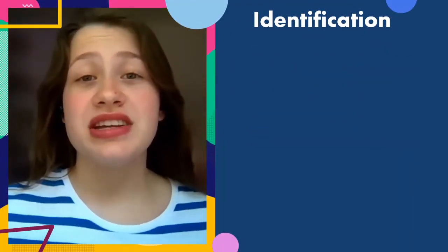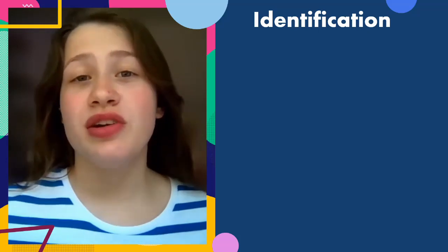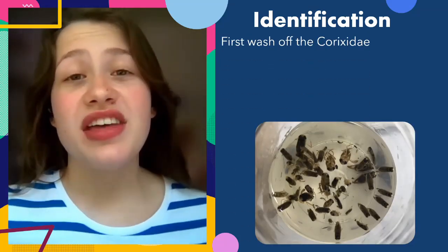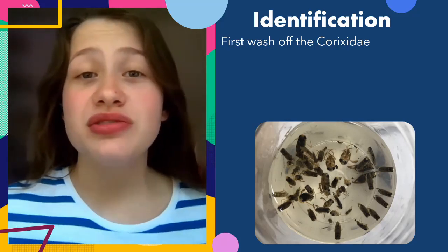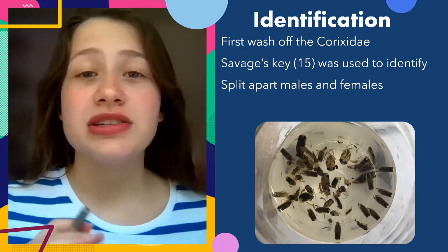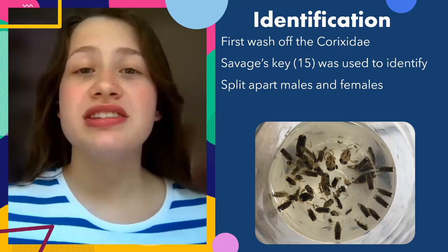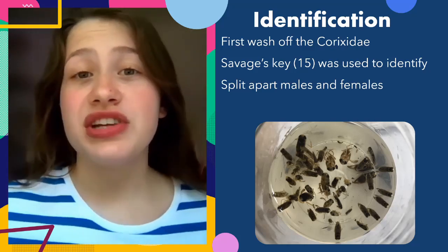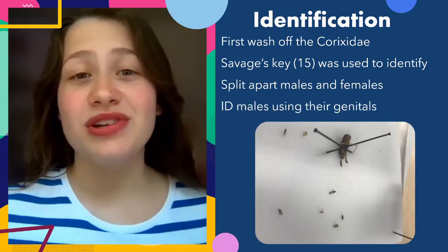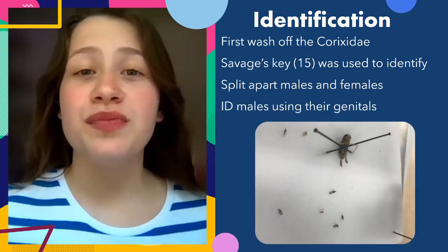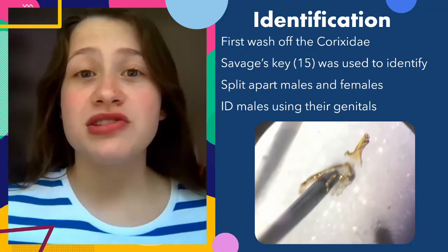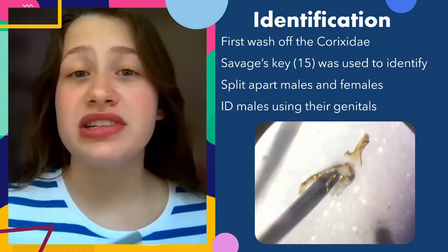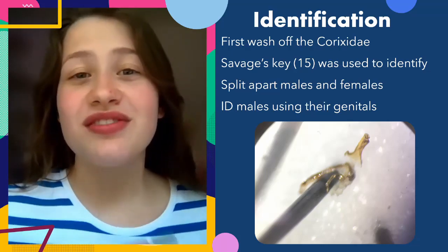Corixidae, much like many other insects, have to be identified using a microscope. As they're in a jar of glycerol, they first have to be washed in water. Then, using Savage's key, they're split into males and females, as the males are much easier to identify. To ID the males, you then have to locate their genitalia, which can end up with bug parts everywhere, but once located it should look like what's shown under the microscope, which can be used to identify them down to species level.